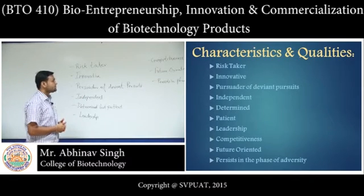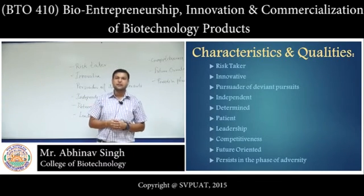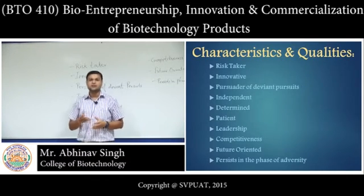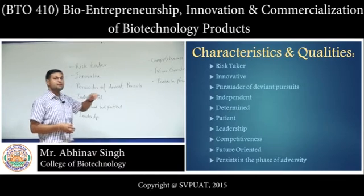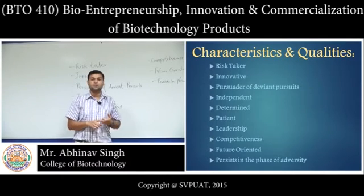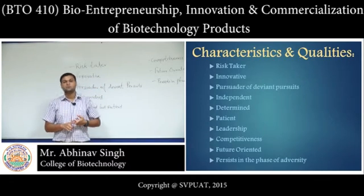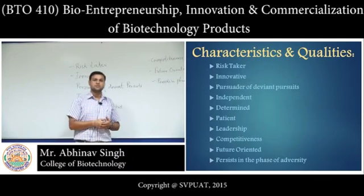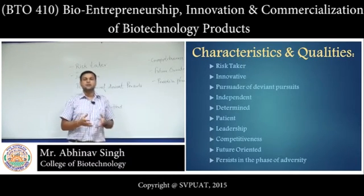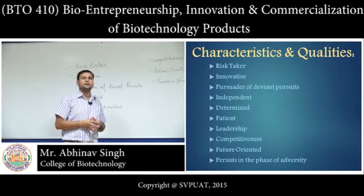Next is being a persuader of deviant pursuits, meaning he should not be sticking to a certain kind of task but should have diversity in all kinds of activities involved in his business. If his organization requires four or five different kinds of tasks — knowing how a product is going to be manufactured, how it is going to be marketed, how consumers are going to be attracted — he should have the knowledge and capability to do different types of tasks as required.